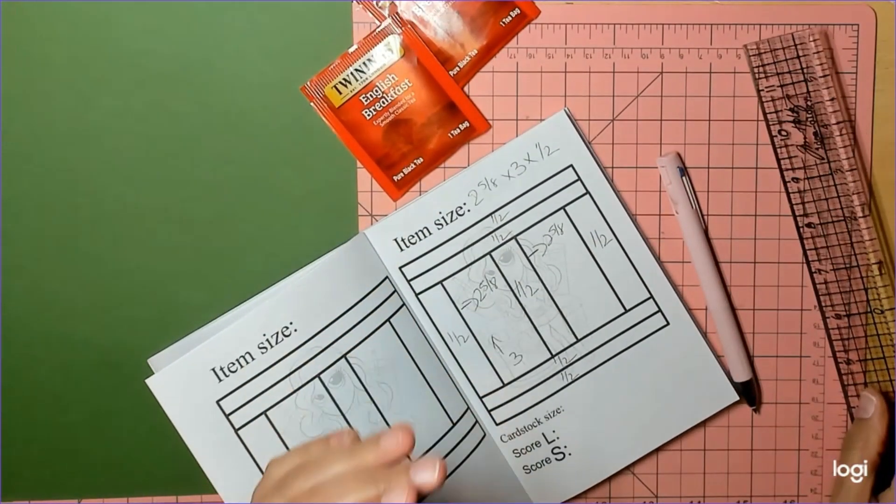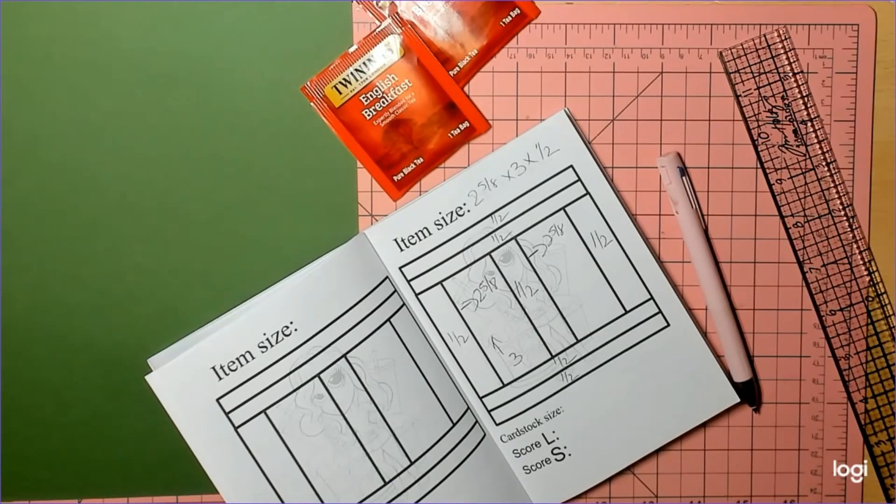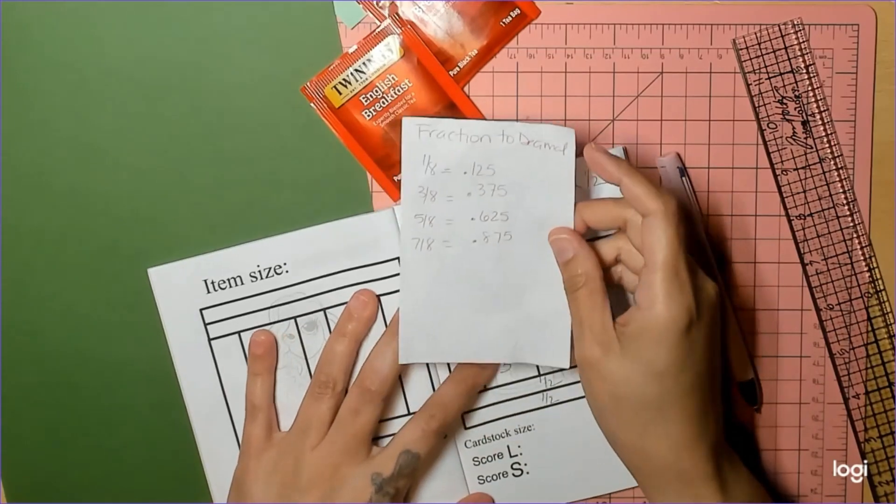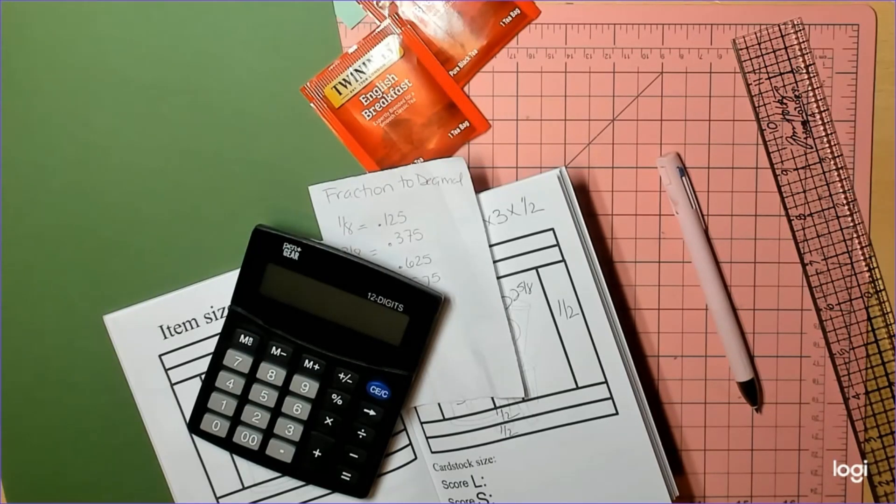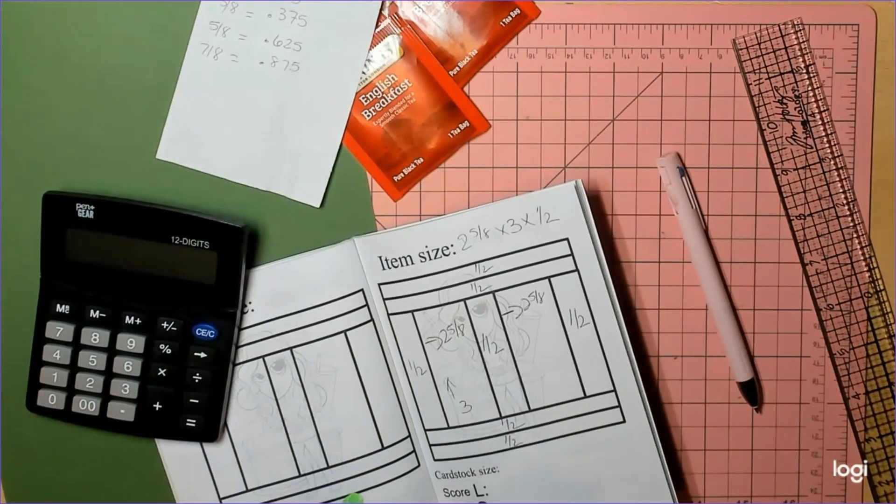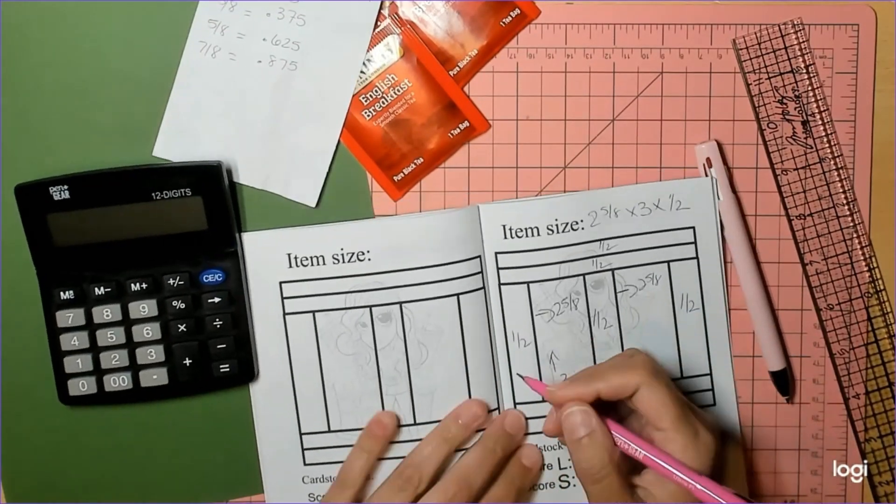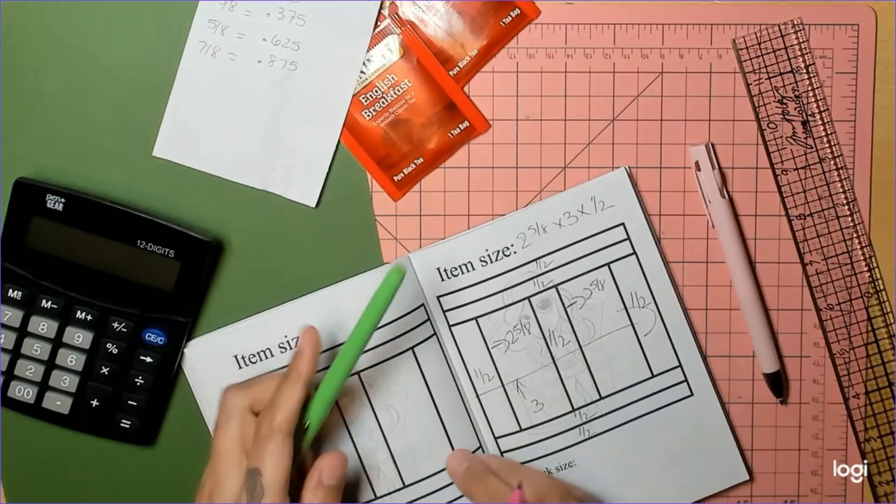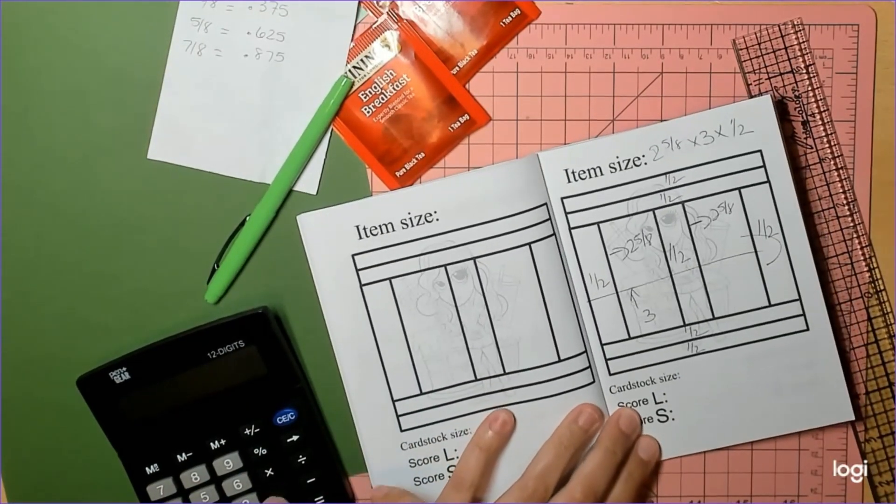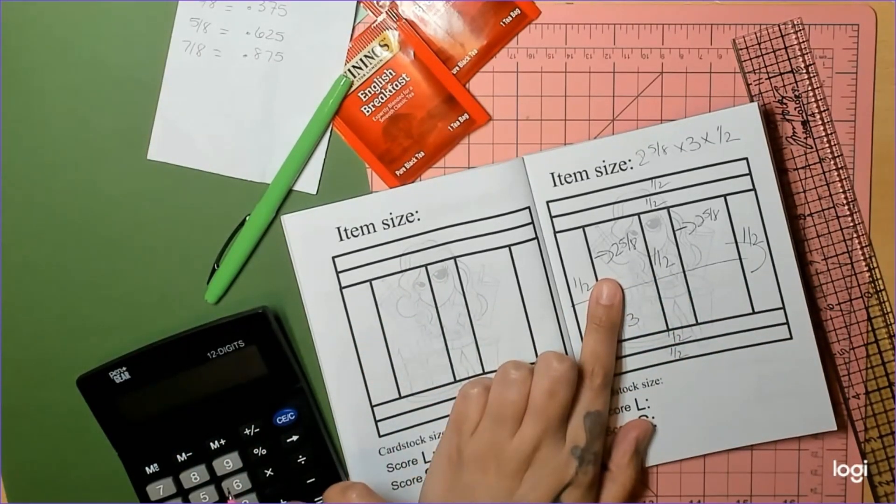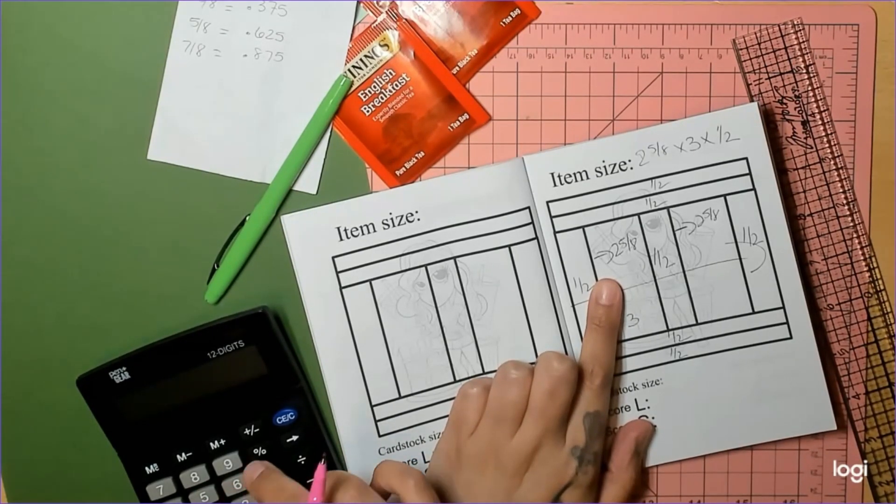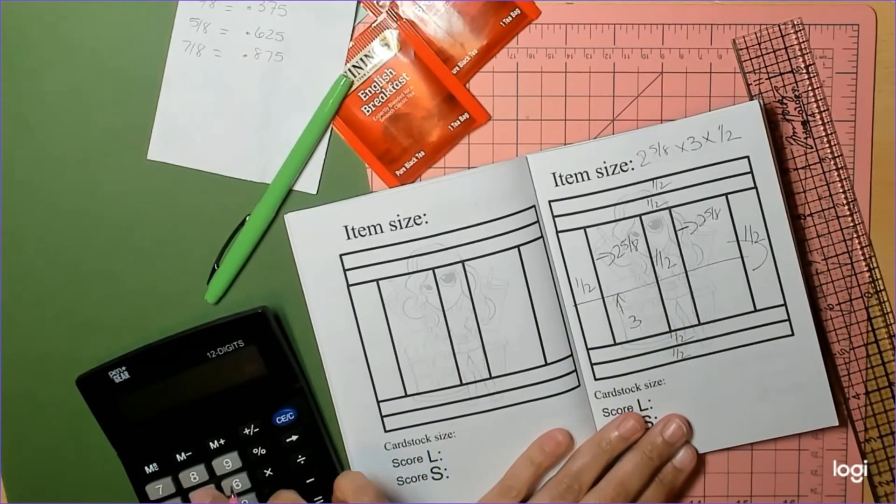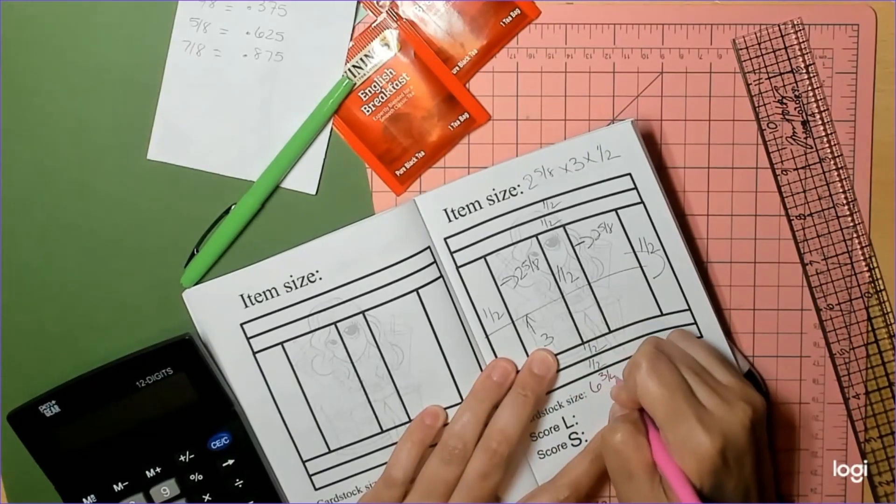We're going to get our little decimal cheat sheet out. Let's math our left to right. So we have 0.5 plus two and five-eighths, which would be 2.625 plus 0.5 plus 2.625 plus 0.5 equals six and three-quarters.